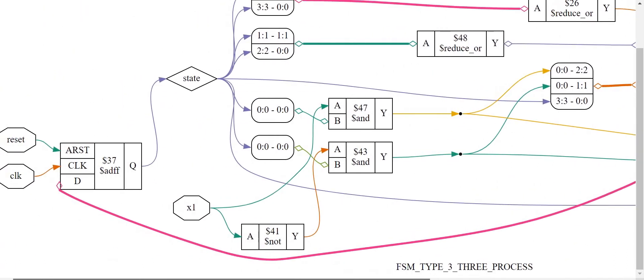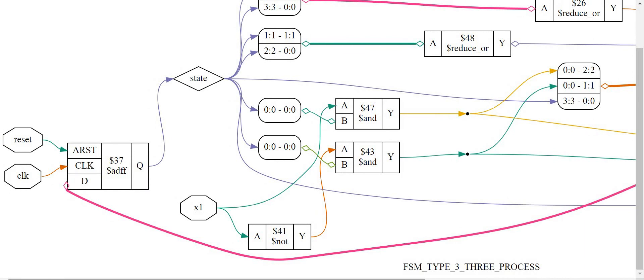Always remember in this kind of three procedural block FSM design technique: the present state is a sequential logic, the next state is a combinational logic, and the output stage is combinational — but it can also be sequential if we register the output.